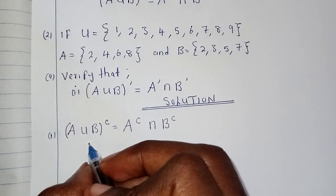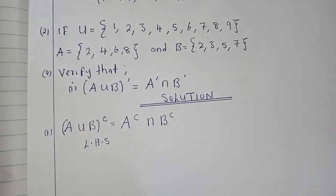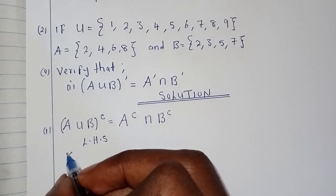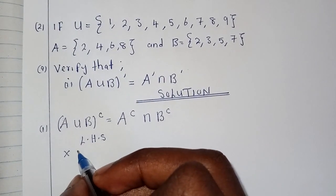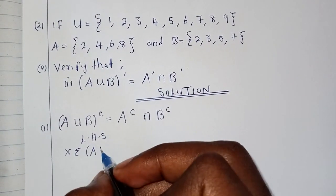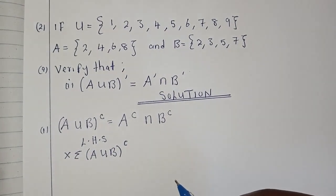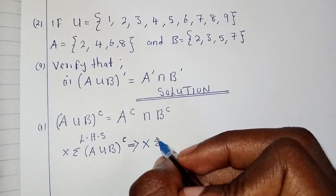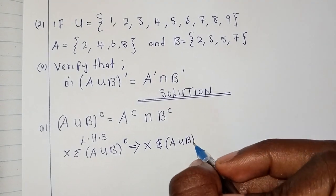We will start with the left-hand side. What we are simply saying here is this: let's imagine that x is some member of (A union B) complement. Then if x is a member of (A union B) complement, that simply means that x is not a member of A union B.